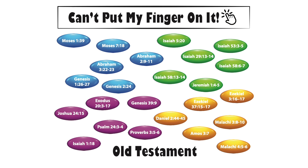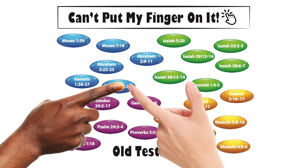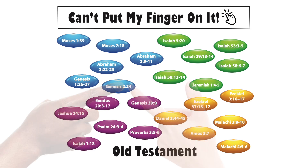Then the teacher calls out the clue. In this example, we might say, 'A man shall cleave to his wife and they shall be one.' The first student to put his finger on the correct reference wins a point. The teacher says Genesis 2:24. Did you get it right? Good. The first finger on that wins.